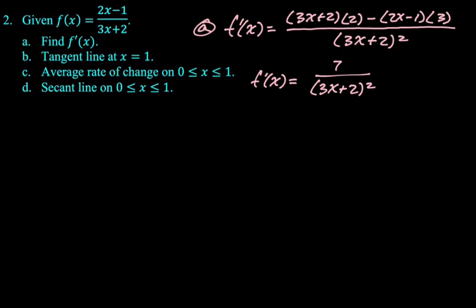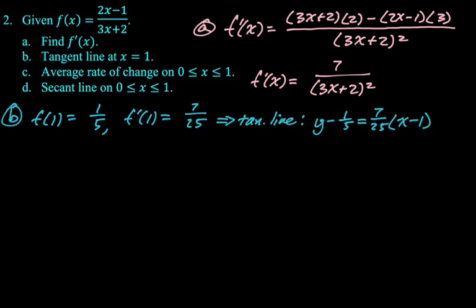For part B, we want the tangent at x equals 1, so I need to know f of 1. Well, f of 1, if we just plug in, so we're plugging 1, and we get 2 minus 1 is 1, 3 plus 2 is 5. f prime of 1, we're going to plug into the derivative to get f prime of 1 is 7 over 25, and then our tangent line, we're going to use point slope form. y minus 1 fifth equals 7 over 25, quantity x minus 1. Nice.